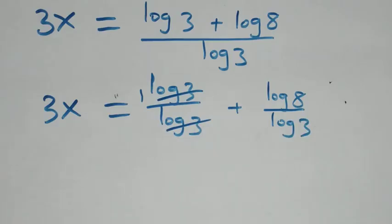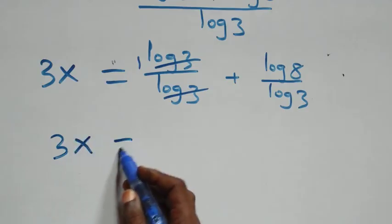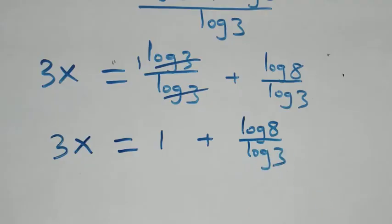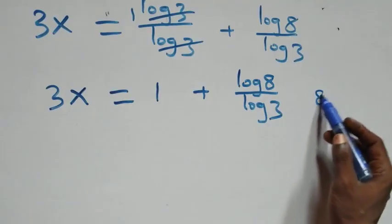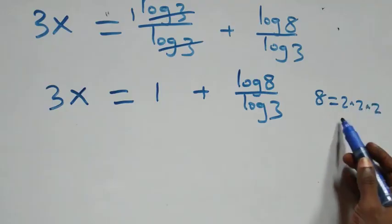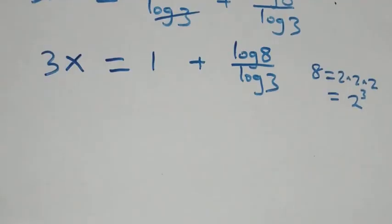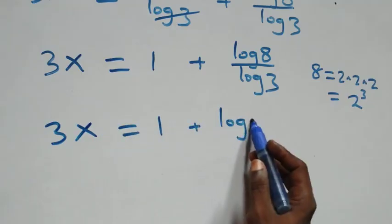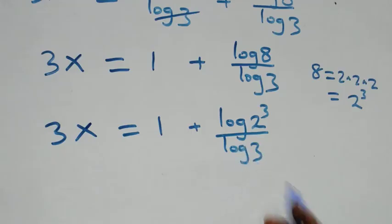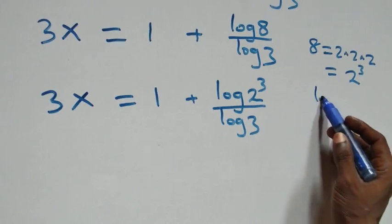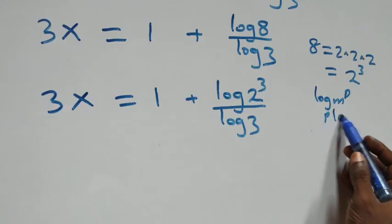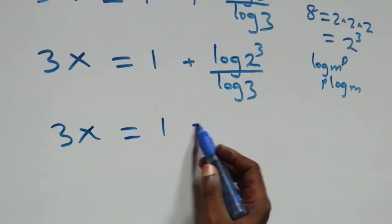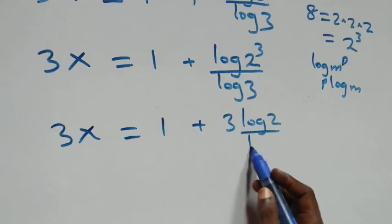Now 8 can be expressed as 2 times 2 times 2, which is 2 raised to power 3. Applying the power rule of log — log m raised to power p is the same as p log m — the 3 comes out front. What we have now becomes 3x equals to 1 plus 3 log 2 over log 3.